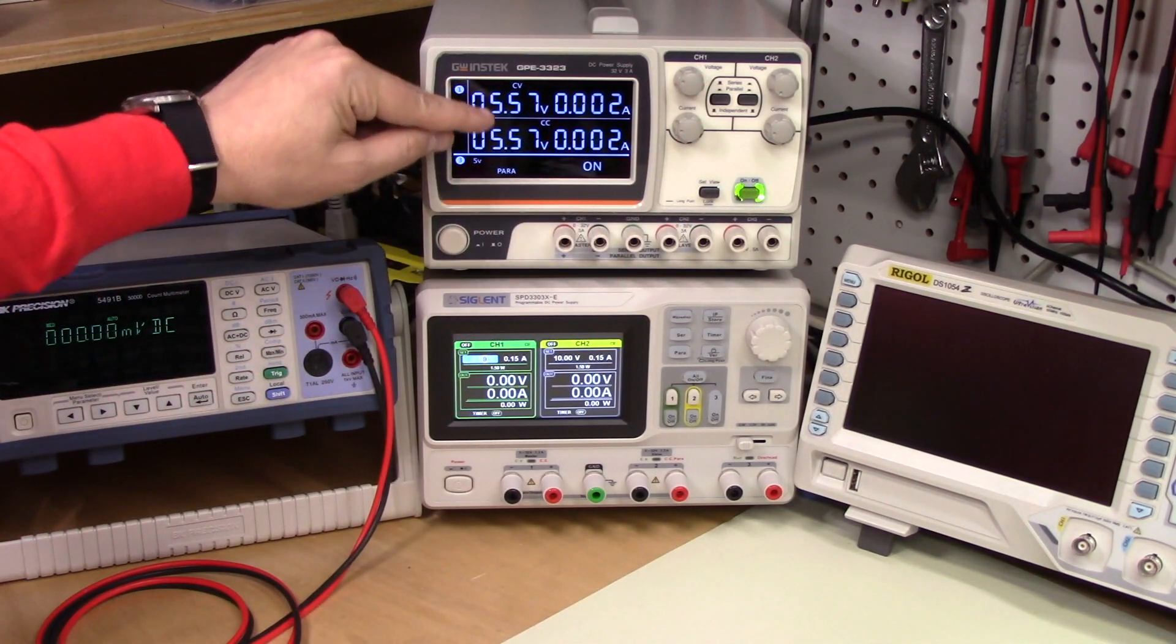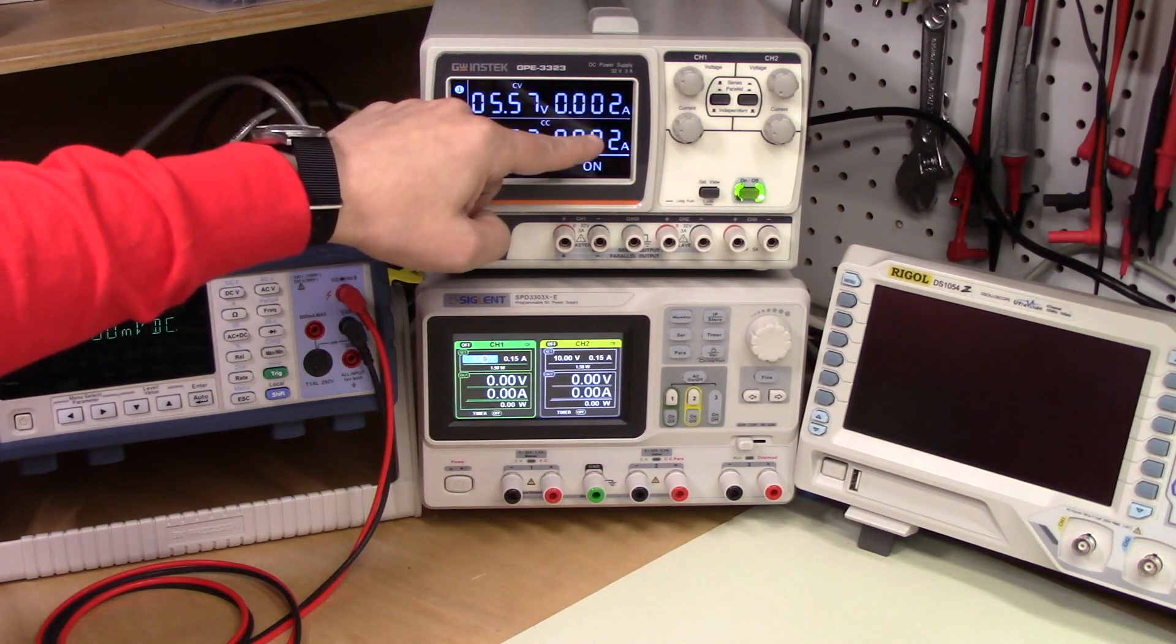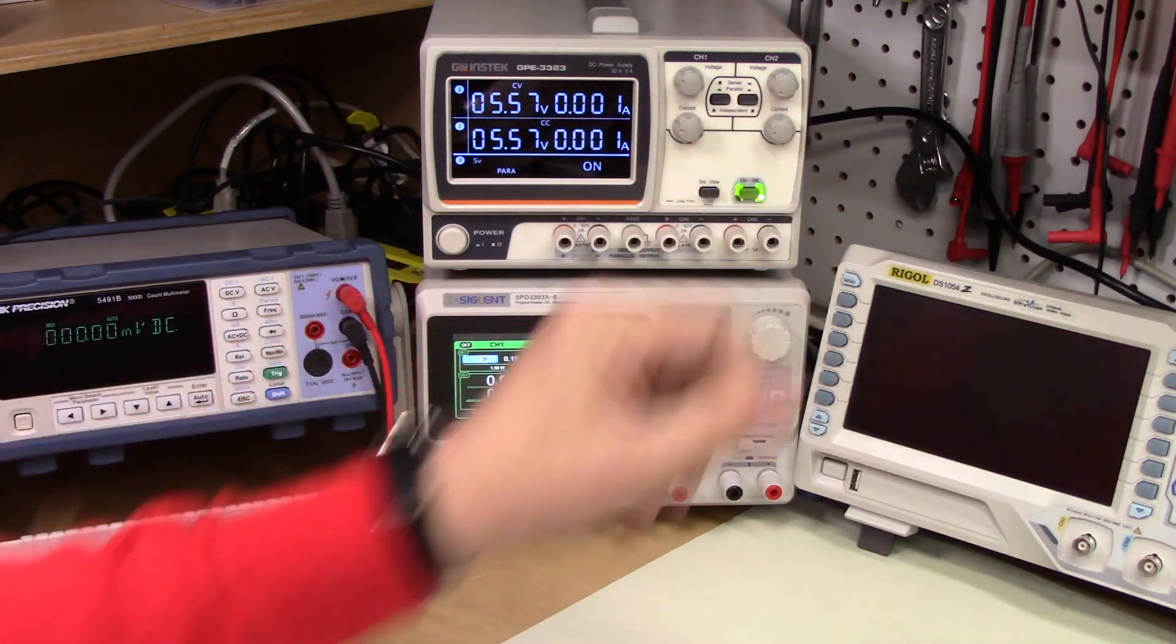Seems like you should have channel one voltage and current and channel two voltage and current. So that it would correspond to the buttons. That's going to take getting used to for me.